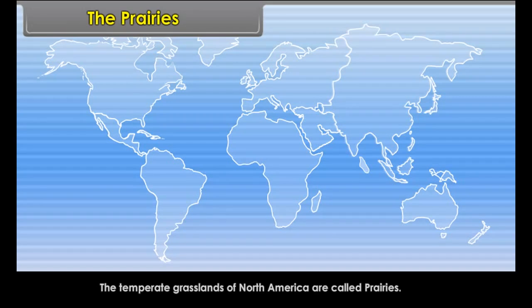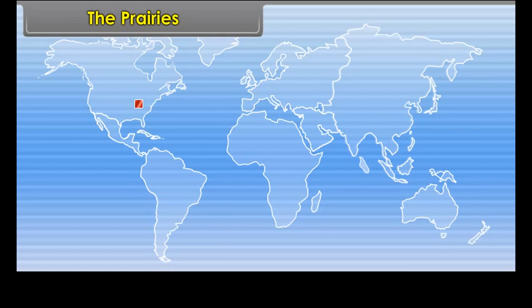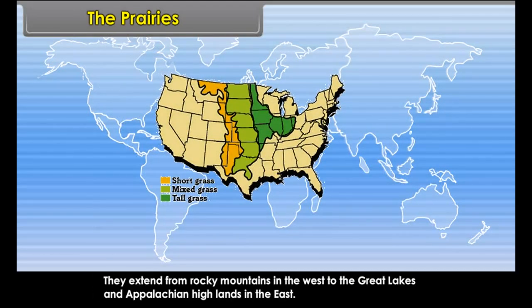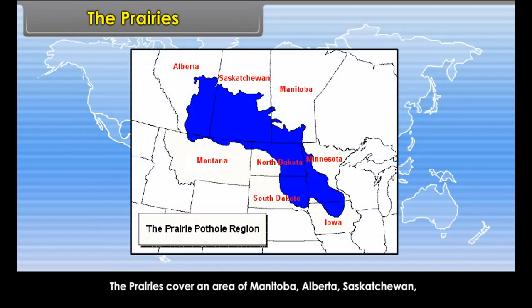The Prairies: The Temperate Grasslands of North America are called Prairies. For the most part, Prairies are treeless, but near the low-lying plains flanking river valleys, woodlands can be found. They extend from the Rocky Mountains in the west to the Great Lakes and Appalachian Highlands in the east.